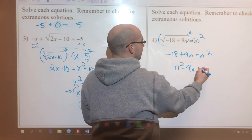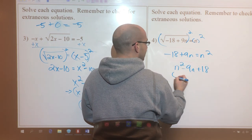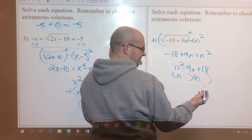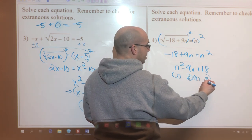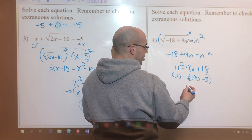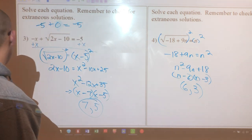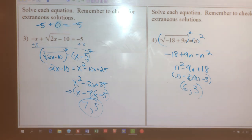Moving everything over to the right-hand side will give me n squared minus 9n plus 18. Very simple. I know I need an n and an n, I'm looking for a 6 and a 3, and they are both negative. 6 and 3 should be my answer, and they are. Once I plug them back in, they will be the solutions.